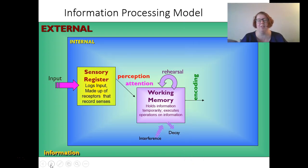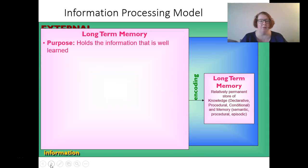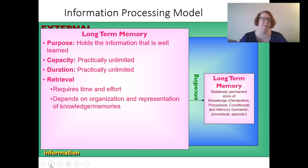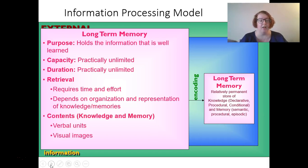We want to encode information to our long-term memory. Our long-term memory holds information that's well learned — it's practically unlimited in capacity and duration. But the trick is retrieval: how do we get things from our long-term memory back? That requires time and effort and depends on our organization. There's debate about whether you actually forget things or are just unable to retrieve them. It really depends on how we organize that knowledge and how we represented it. The contents are both verbal and visual — knowledge and memory.